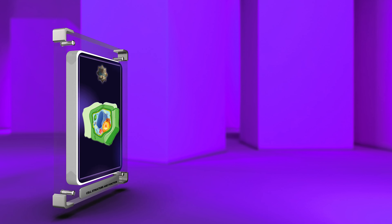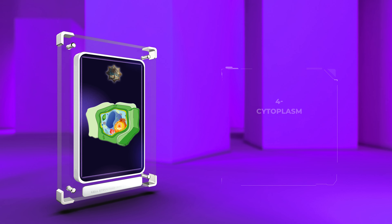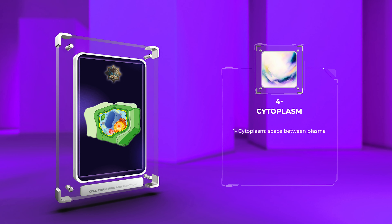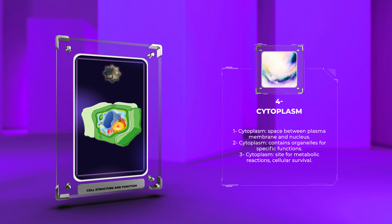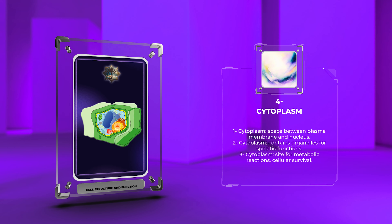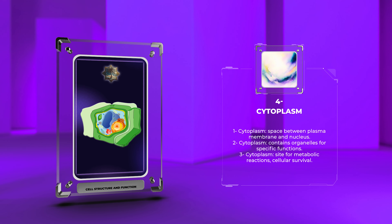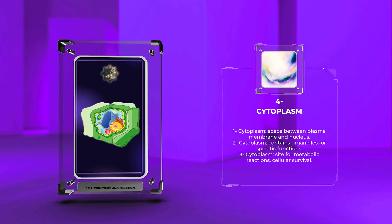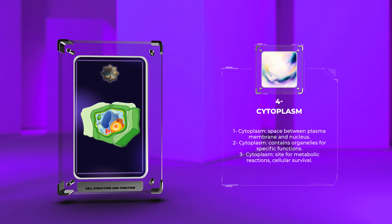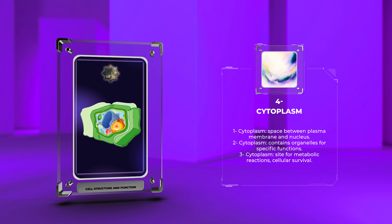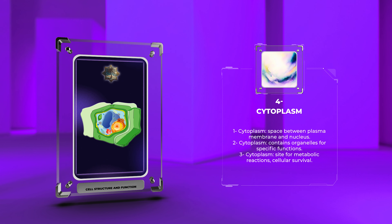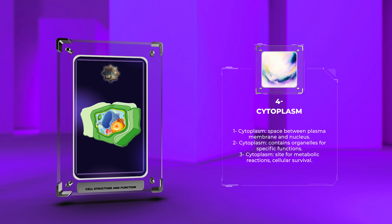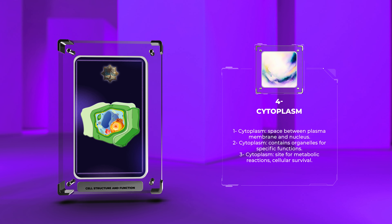The cytoplasm occupies the space between the plasma membrane and the nucleus. It contains various organelles, such as mitochondria, endoplasmic reticulum, and Golgi apparatus, which carry out specific cellular functions. Additionally, the cytoplasm serves as a site for numerous metabolic reactions necessary for cellular survival.